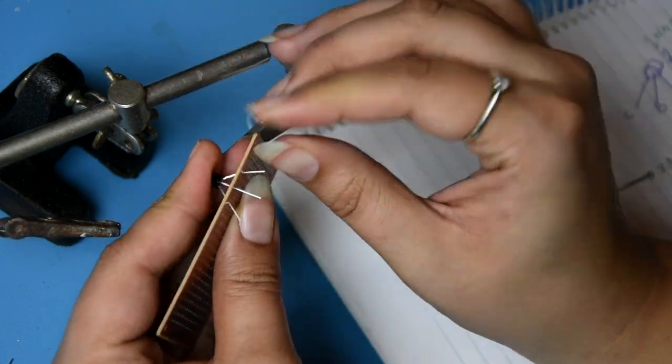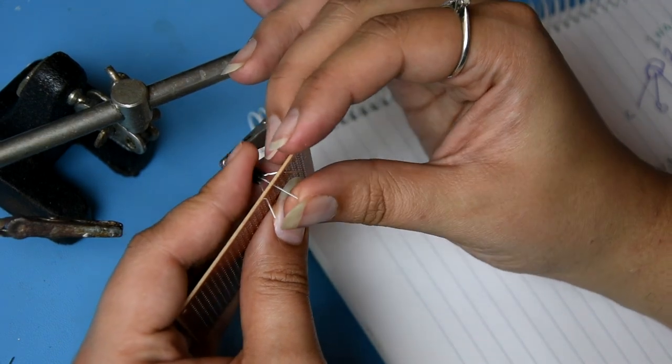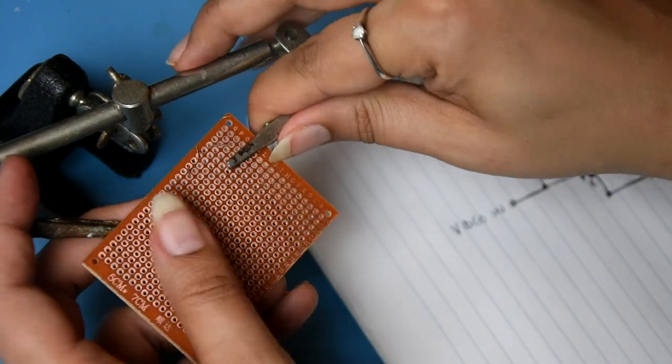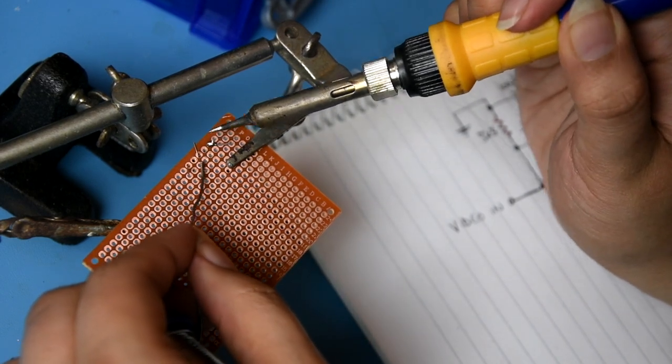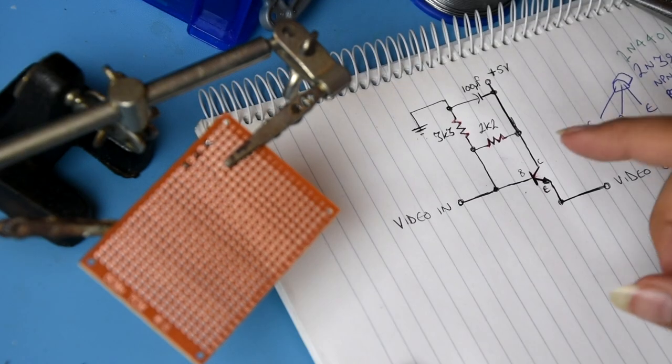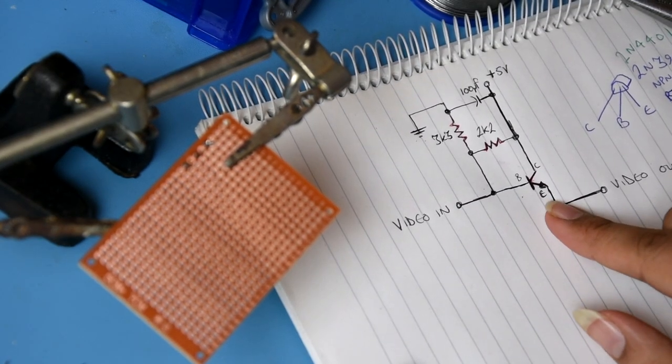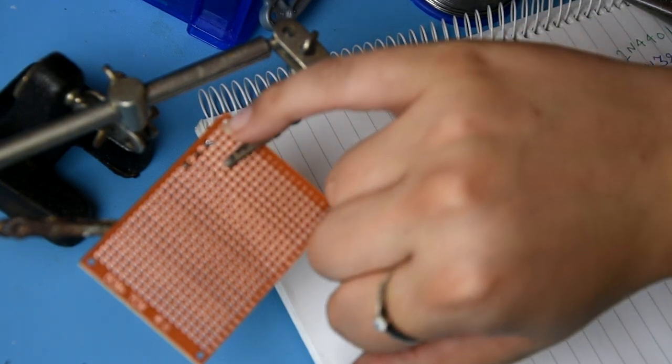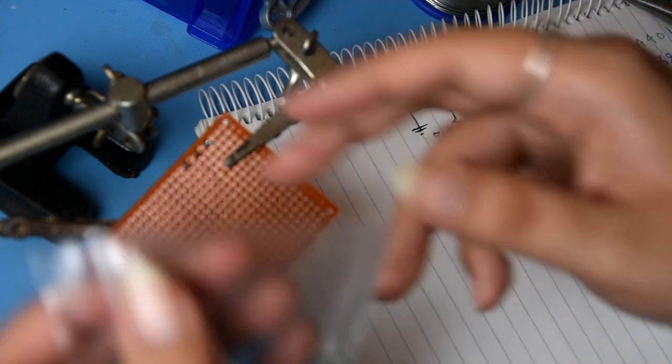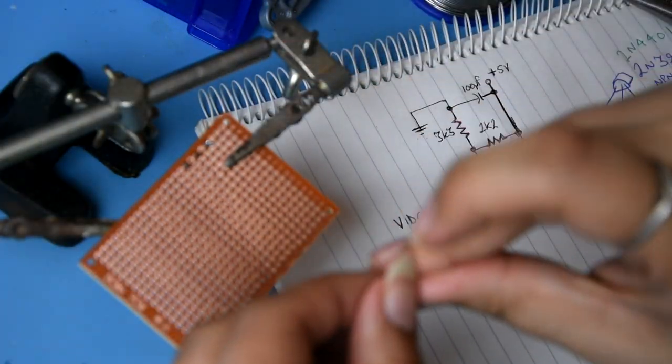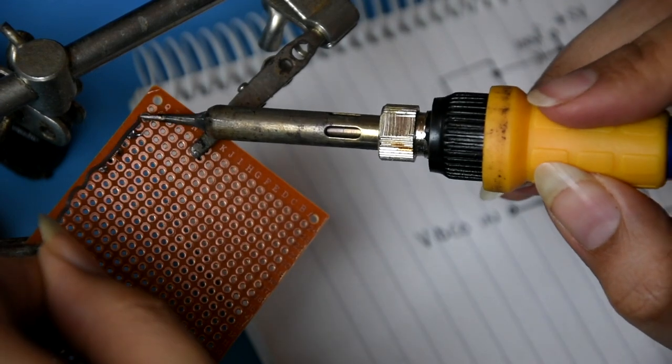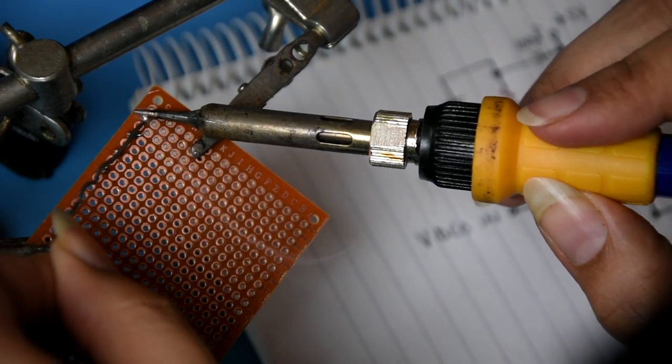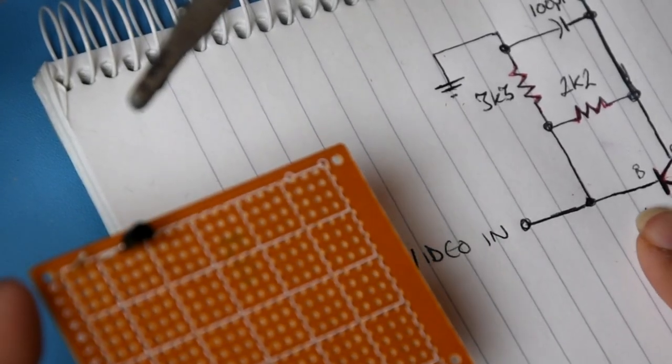As you can see here, the emitter is actually the video out. So what we want to do is just put a terminal pin next to the emitter and just join them up together.